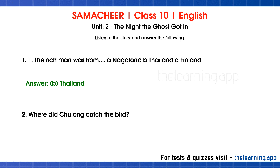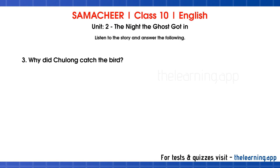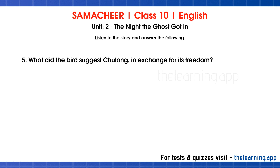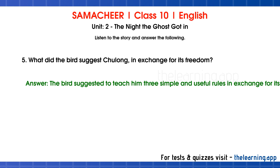Question 3: Why did Chulung catch the bird? Correct answer is: Chulung caught the bird to make money. Question 4: What will happen to the bird in imprisonment? Correct answer is: the bird will lose its beauty and sweet voice. Question 5: What did the bird suggest to Chulung in exchange for its freedom? Correct answer is: the bird suggested to teach him three simple and useful rules in exchange for its freedom.